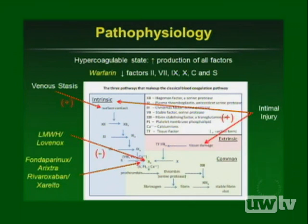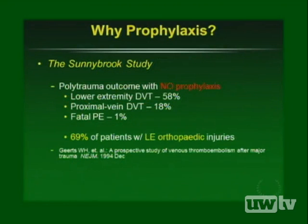Why prophylaxis? The push came from the Sunnybrook study of polytrauma patients, which identified a fatal PE rate of 1% in patients without prophylaxis. That 1% fatal PE rate is the key target we must reduce. This was first published in 1994.